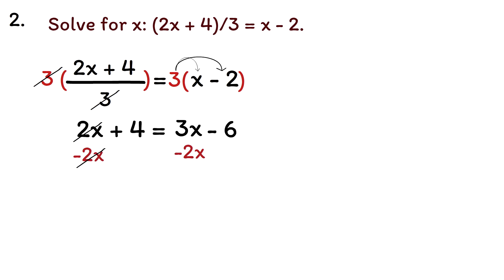Let's subtract 2x from both sides of the equation. The 2x will cancel out. 3x minus 2x is 1x, which is simply x. We now have 4 equals x minus 6.